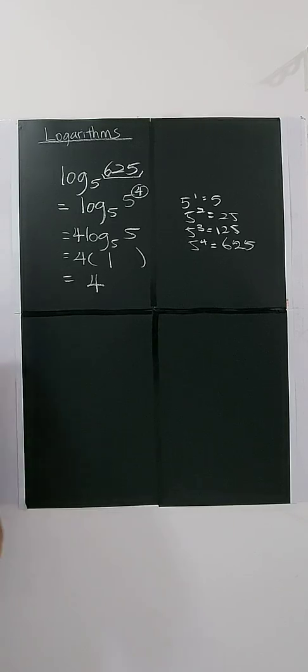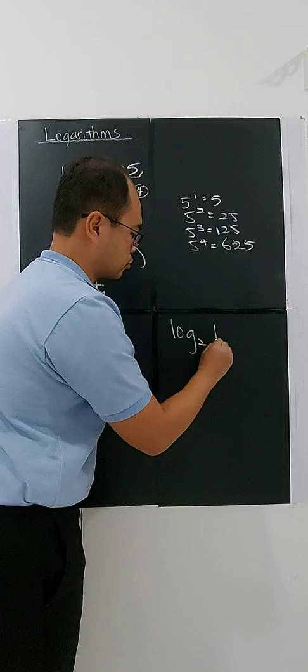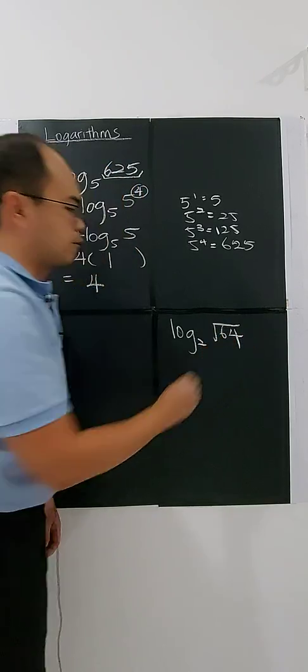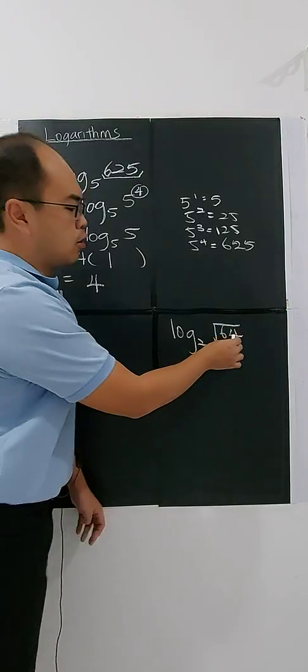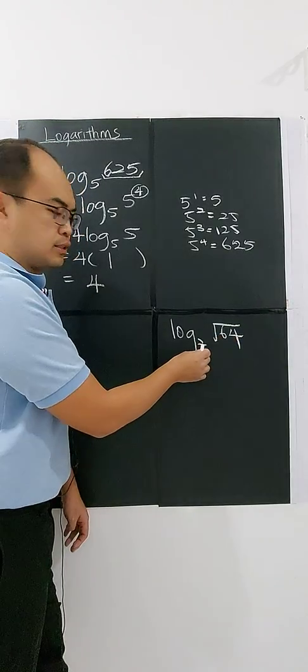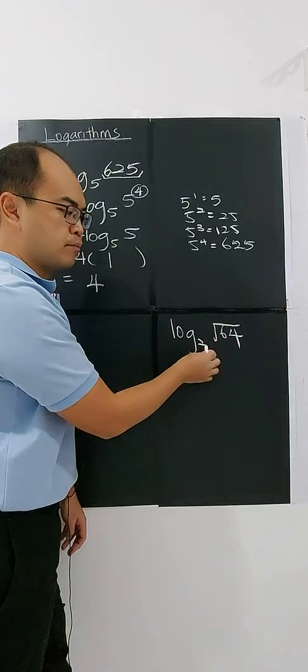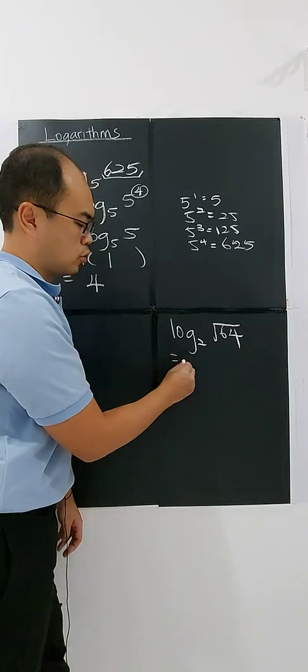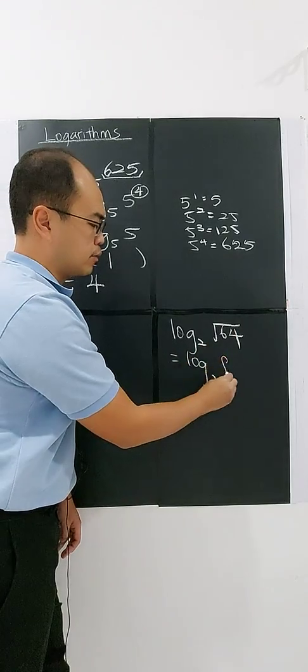For example, if you have log base 2 of square root of 64. You have to check whether 64, is 2 the base for 64? Yes, 2 is the base for 64. You can actually log 2, square root of 64 will become 8.